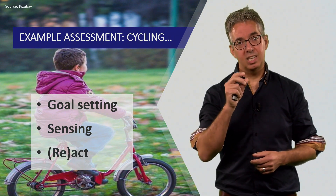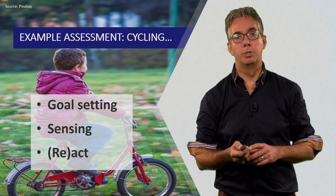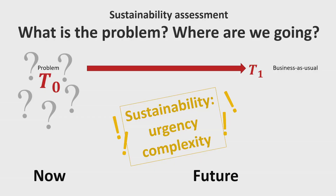We will see these three same mechanisms present in more complex assessments. For sustainability assessment, we can do some sensing — try to understand the current problem: what is going on, how are different effects linked? Based on that, we can look forward to a business-as-usual scenario. For sustainability problems, that comes with an extra urgency, because it will show that the current situation and the future is not sustainable, and it will reveal complexity. So we really need to study hard to do complex assessments.